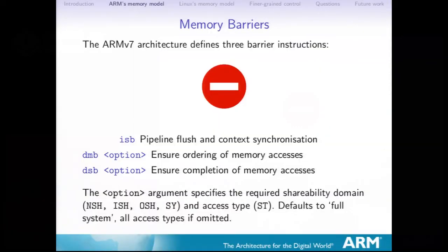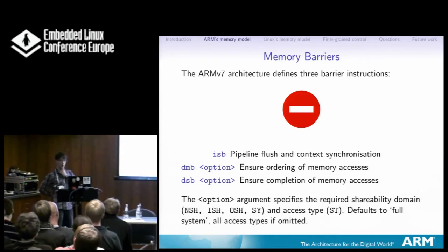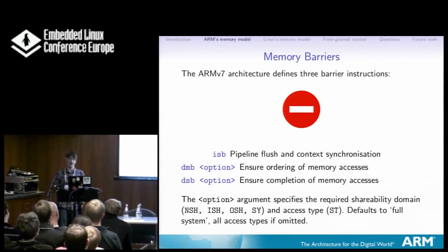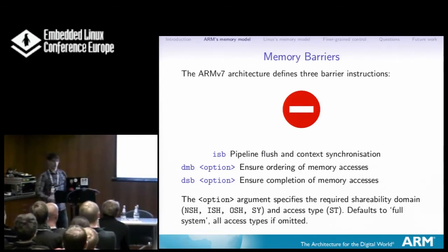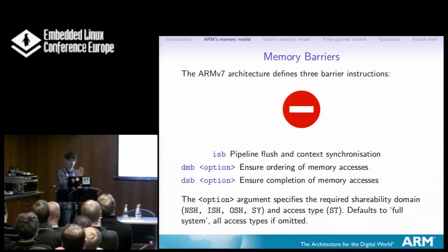When you can't use dependencies, you have to use memory barriers. We have three types in ARM: ISB, DMB, and DSB. I'm not really going to talk much about ISB — it can be subtle, but it's not the most interesting one. DMB ensures the ordering of memory accesses, and DSB ensures the completion of memory accesses. If you stick a DMB in the instruction stream, the instruction stream can continue to be processed — we just make sure things can't overtake each other. With the DSB, we stall and wait for everything to finish before we can proceed with any instruction.